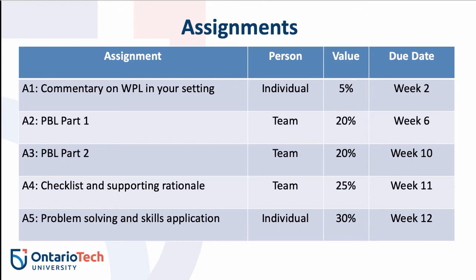There are three team assignments and two individual assignments. The team assignments are cumulatively worth 65% and the individual assignments are worth 35%. The due dates are spread out to give you time to complete each one and for me to give you feedback. The two PBL assignments are broken down further, with a variety of due dates — for example, links or uploads of your videos are due prior to the tutorial, giving others time to prep in advance. The fourth assignment involves creating a checklist and writing a supporting rationale based on problem-based learning issues. The final individual assignment asks you to review major course elements and apply them to creating a possible solution to a problem you have identified.